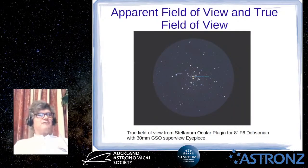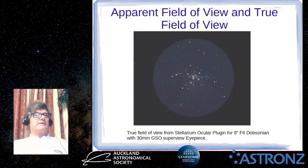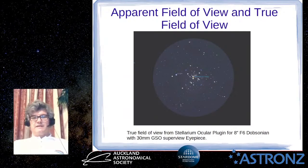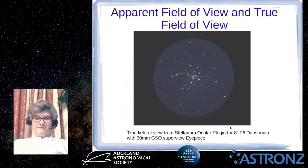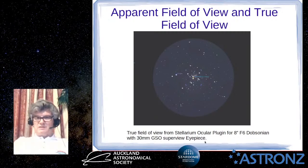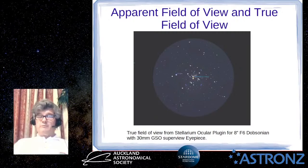Now for apparent field of view and true field of view. I've used the Stellarium plugin called Ocular — you tell it what telescope and eyepiece combination you're using, and it shows you what you can actually see in the eyepiece. This is looking at the star cluster Messier 41 in Canis Major, using an 8-inch f/6 Dobsonian with a 30mm GSO Superview eyepiece. The plugin knows the apparent field of view of that eyepiece and calculates the true field, so you can plan your session and choose the best eyepiece to frame your target.